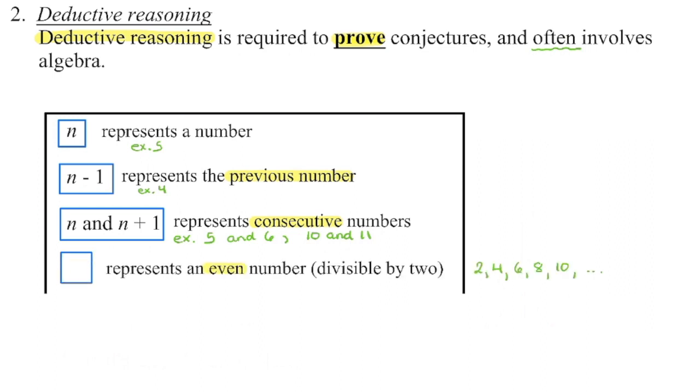In terms of an even number, think about your even numbers, 2, 4, 6, 8, 10, etc. All of your even numbers are divisible by 2. You cannot just use N to represent an even number because let's say N is 5, 5 is not even. So an even number, because it's divisible by 2, you have to make sure that you multiply that variable by 2 to guarantee that it's going to be even.